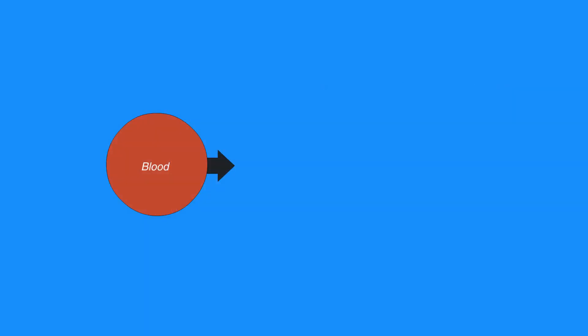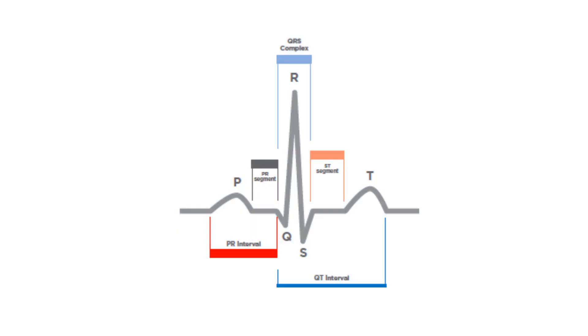When blood enters the atria of the heart, an electrical impulse sent from the SA node conducts through the atria, resulting in atrial contraction, which registers as the P wave on an electrocardiogram, or ECG strip.